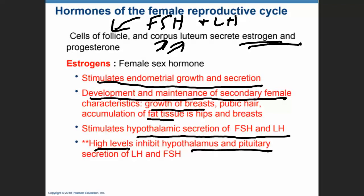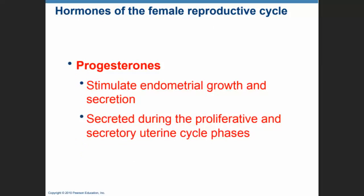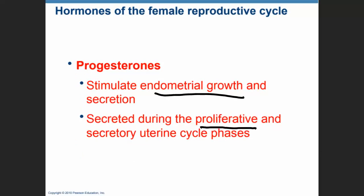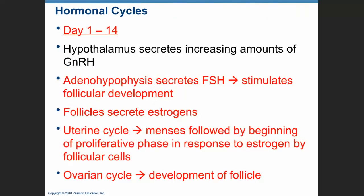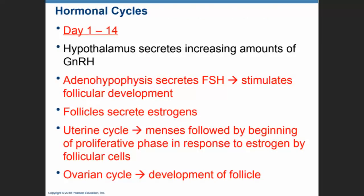Progesterone, on the other hand, is actually the main hormone that stimulates the uterine cycle. It stimulates endometrial growth and is secreted during the proliferative and secretory uterine phases.